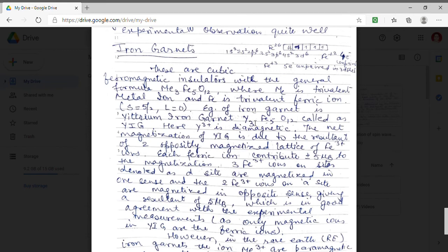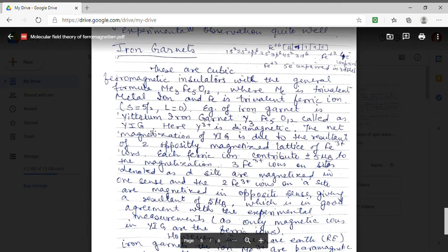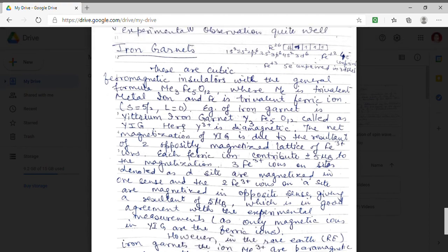That means metal is yttrium. Y3 Fe 5 O 12. Yttrium iron garnet is commonly written as YIG. Here yttrium it is trivalent and it is diamagnetic in nature. So in this the magnetization will come from the trivalent iron ions.